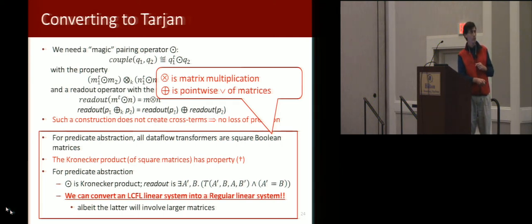So for predicate abstraction, we can use the Kronecker product for our coupling operator. The readout operation I'm not going to explain, but the bottom line is this. We can convert an LCFL linear system into a regular linear system, albeit at the cost of using larger matrices. I think that's pretty cool.